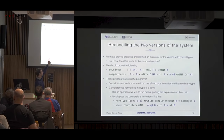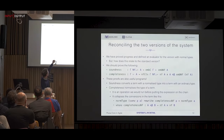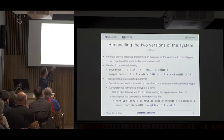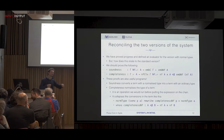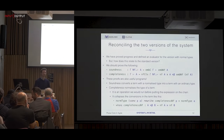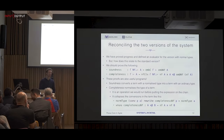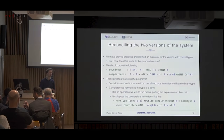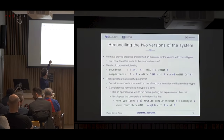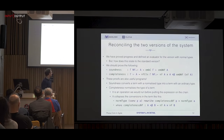Soundness says: if our type checker — the normalized version — says yes, then the original system should say yes as well. We have to embed the normal context and type back into the syntactic judgment to talk about this. Completeness says: if something is really well-typed in the original system, our type checker should say yes as well. There's a bit of wiggle room: you don't have to say the type checker assigns the exact same type — you just have to say it assigns a type that is beta-eta equal to the original.